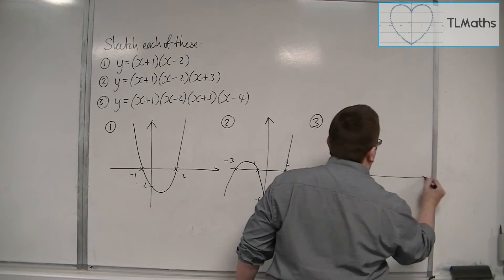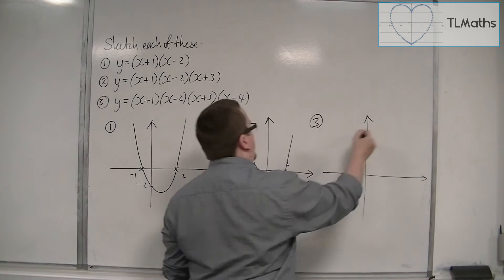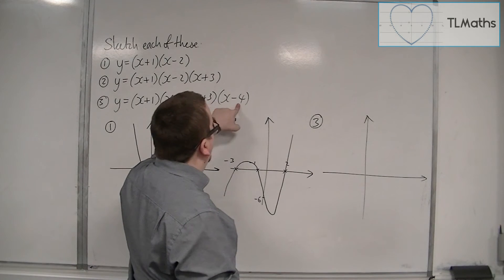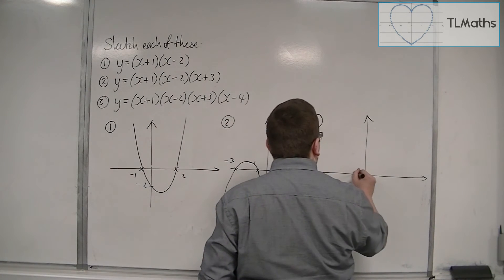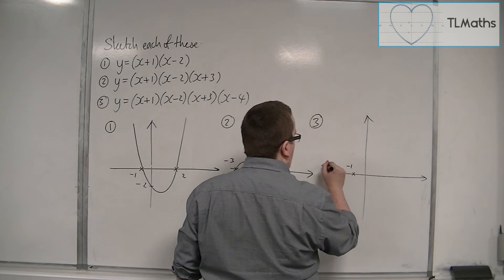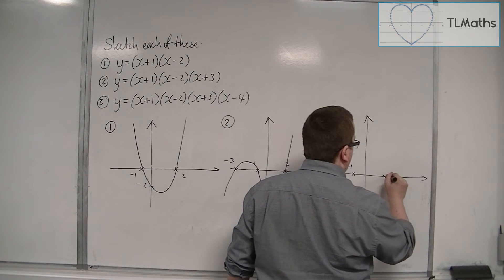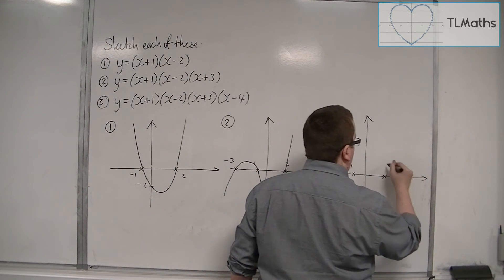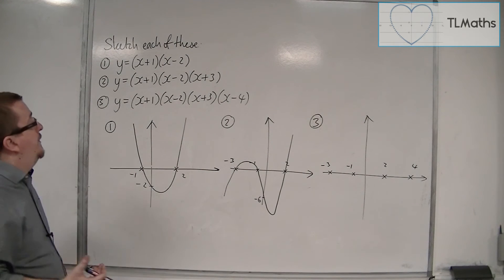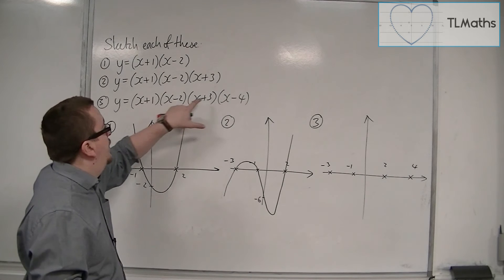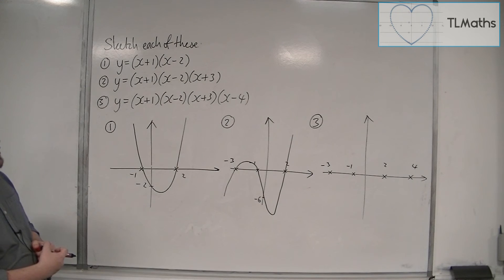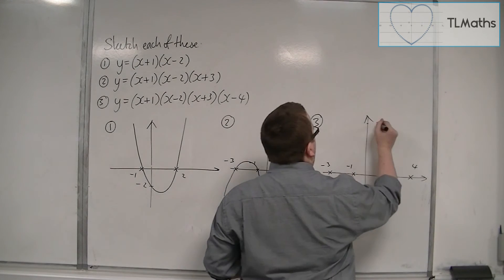Number 3, the quartic. We've got -1, 2, and -3 again, but we've also got 4. So we've got -1, -3, 2, and 4. Where is it crossing the y-axis? That would be at 1 times -2 times 3 times -4, so that would be at 24, all the way up here somewhere.